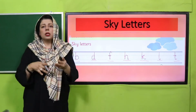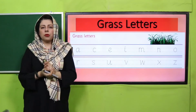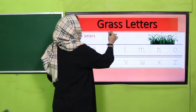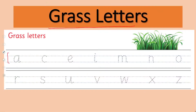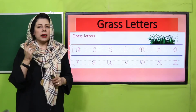Quickly refresh this concept. Next come the grass letters — those that are written in the middle two lines. Repeat with me: small letter a, small letter c, small letter e, small letter i, small letter m, small letter n, small letter o, small letter r, small letter s, small letter u, small letter v, small letter w, small letter x, and small letter z. Well done!